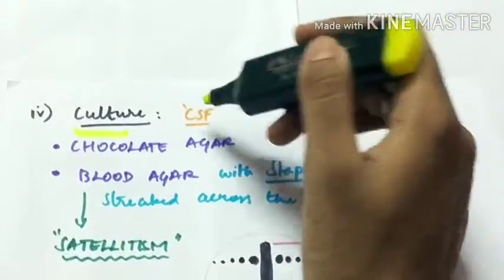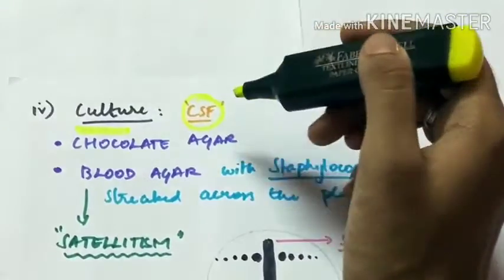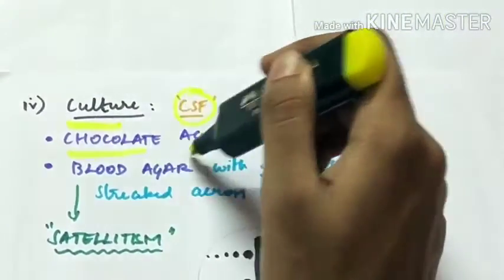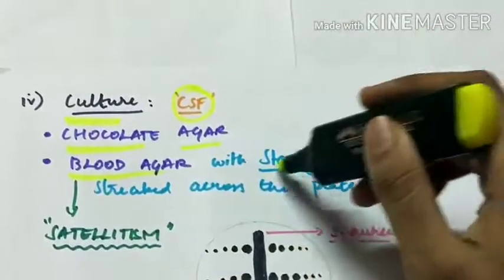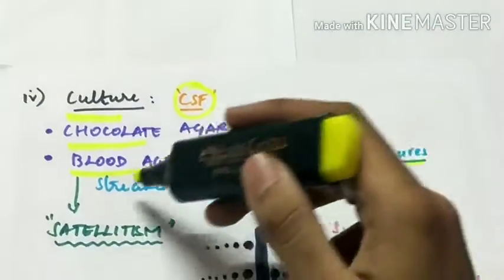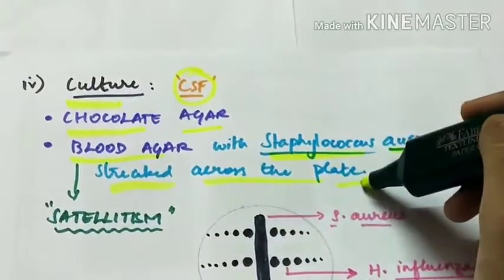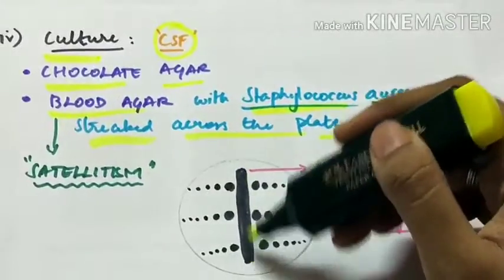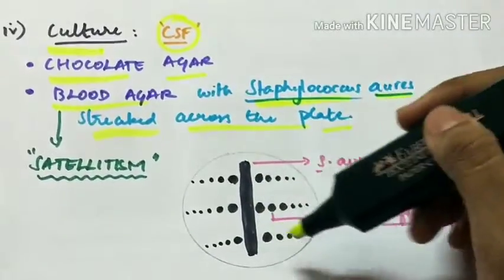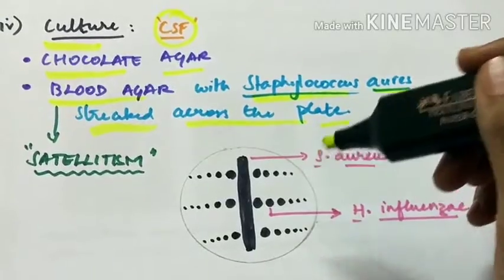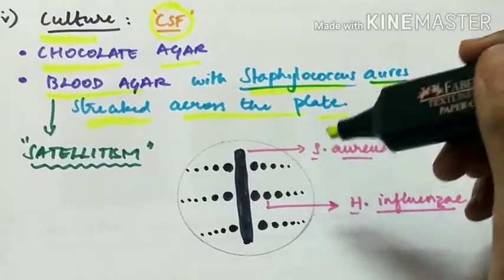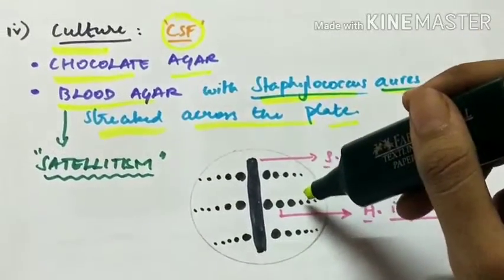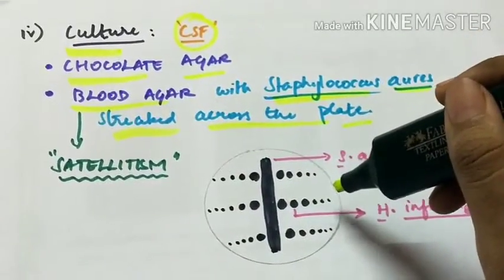Fourth is culture performed using cerebrospinal fluid. Culture can be performed on chocolate agar, blood agar with staphylococcus aureus streaked across the plate. So this is the plate of blood agar in which staphylococcus aureus streaked across the plate.